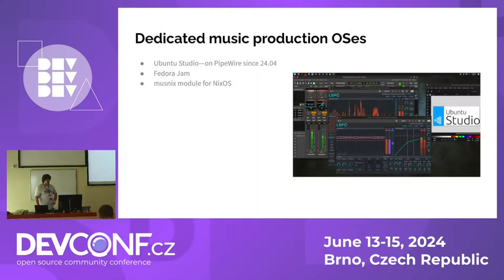There's also Fedora Jam, a Fedora spin focused on music. I use NixOS personally — it's not a music-dedicated OS, but someone created a module for NixOS where I can install it and it does these configuration steps for me, including compiling a fully preemptible kernel every time I do a system upgrade. So I don't have to worry about that.